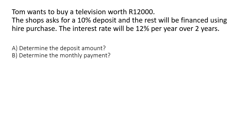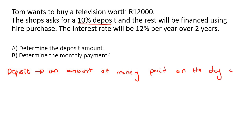So Tom wants to buy a television worth 12,000 rand. Now in real life if you want to buy a television for 12,000 rand, you could either pay 12,000 rand in cash, but if you don't have 12,000 rand then you could maybe do a hire purchase. What that means is that you will be able to pay for the television over a few months or a few years, but you're going to end up paying more than 12,000 rand. A deposit is an amount of money paid on the day of purchase.